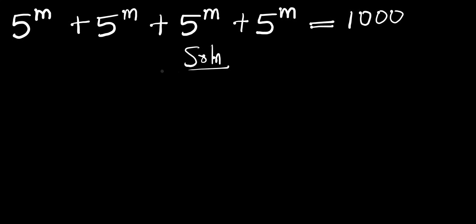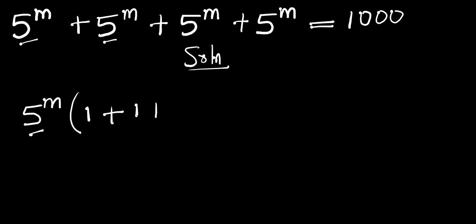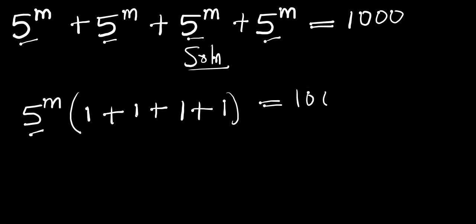In order to solve this problem we can factor out 5 raised to the power of m. You have 5 raised to the power of m multiplied by — dividing each term by 5^m gives 1, so inside the bracket you have 1 plus 1 plus 1 plus 1 — and this equals 1000.